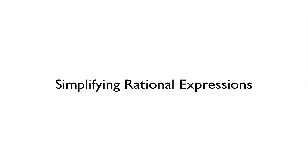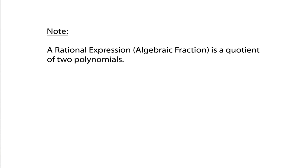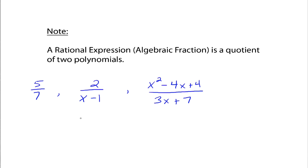In this video, I would like to talk about simplifying rational expressions. A rational expression, also called an algebraic fraction, is a quotient of two polynomials. Here are some examples: 5 over 7 — all your fractions are also called rational expressions because it's just a polynomial over a polynomial. 2 over x minus 1 is a polynomial over a polynomial. It could also be more complicated polynomials like x squared minus 4x plus 4 all over 3x plus 7. That's the entire idea of a rational expression.